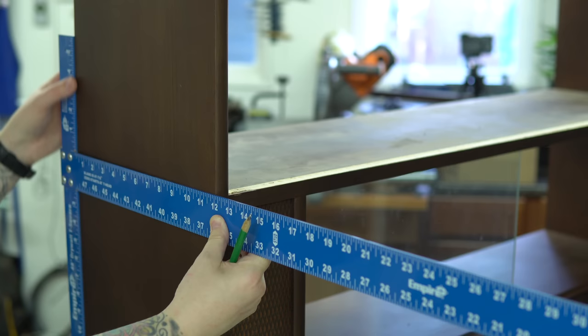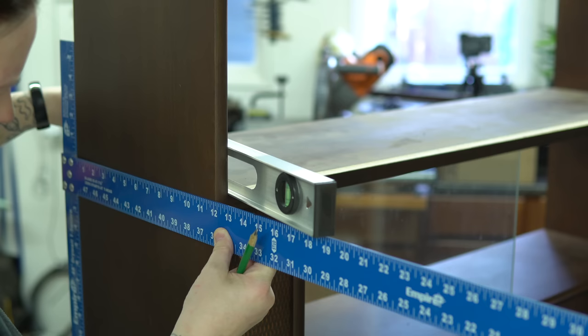This big T square is actually for drywall, but I find it really useful in pieces like this. I have the top of the T against the backside, which is flat. And I just used a level there to show me exactly where to draw this line.